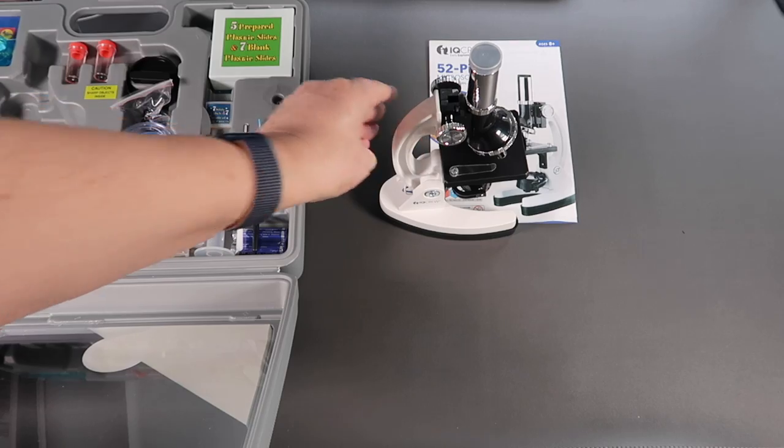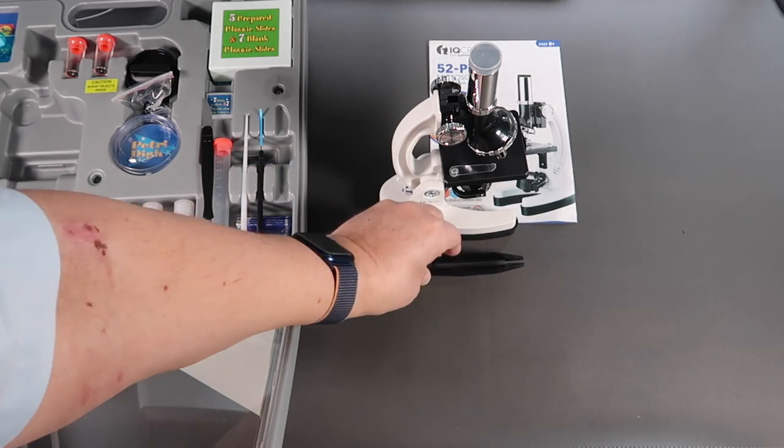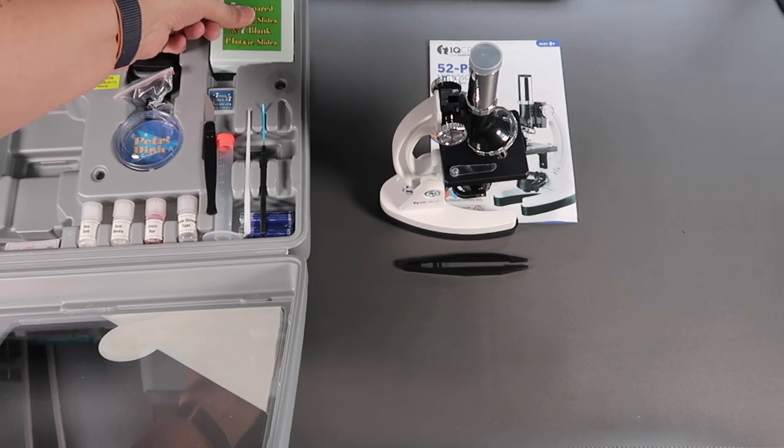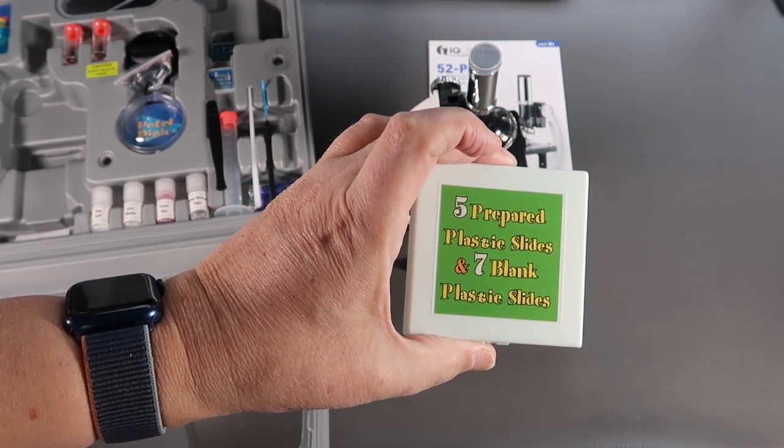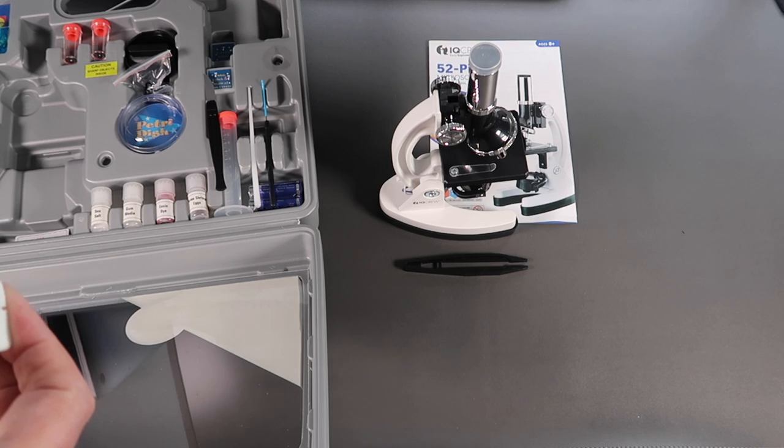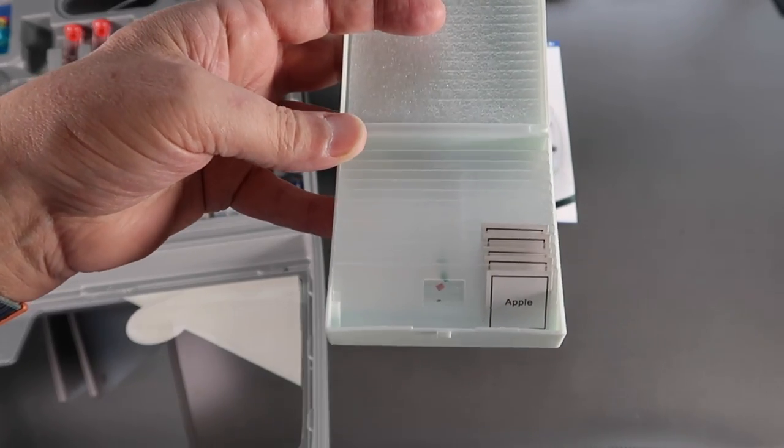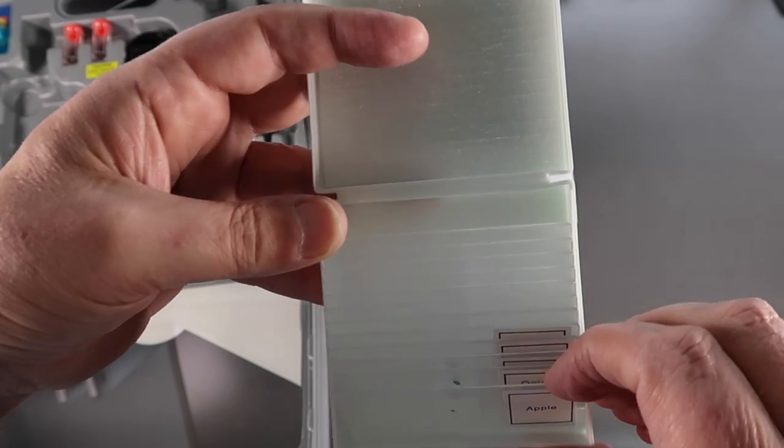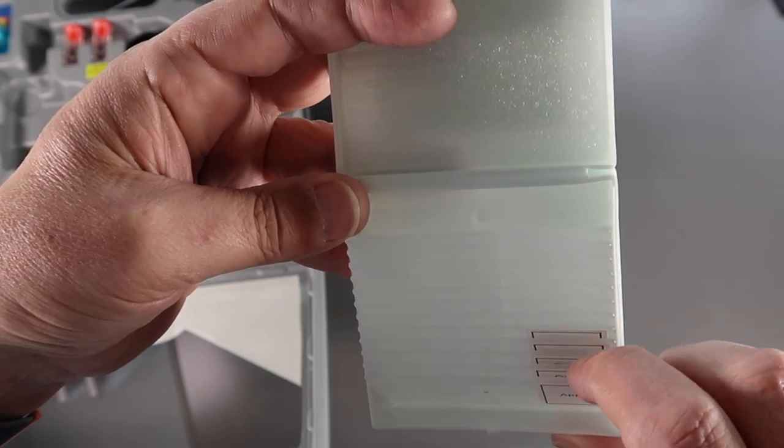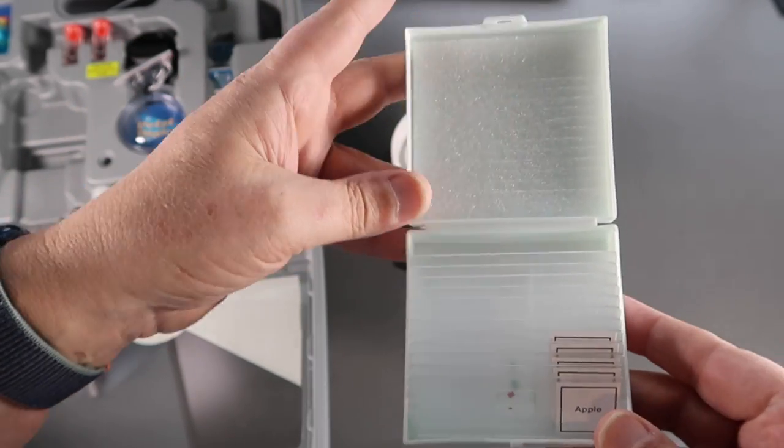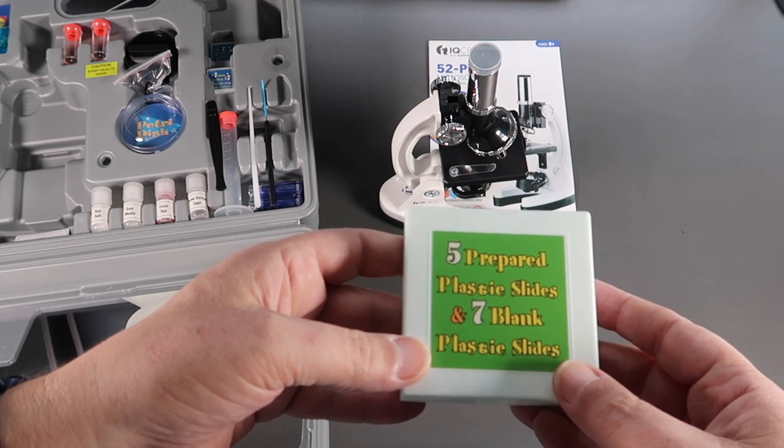So microscope, tweezers, a box of plastic slides. These are actually pre-prepared with samples on there. I see an apple, an onion, broad beans. So that's very interesting. They actually give you some samples to look at. Yeah, five prepared slides and seven blank slides.